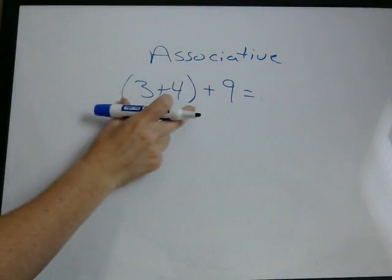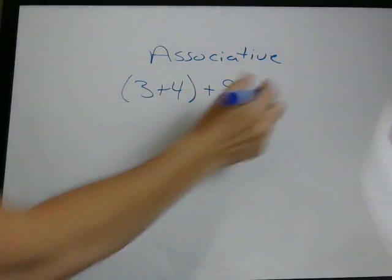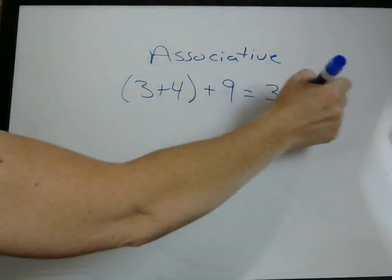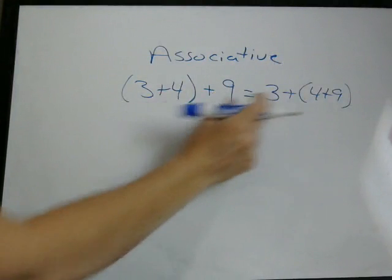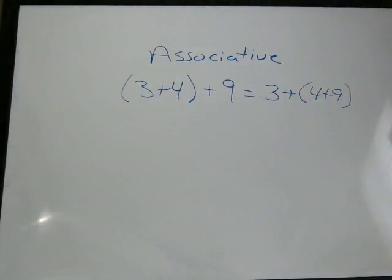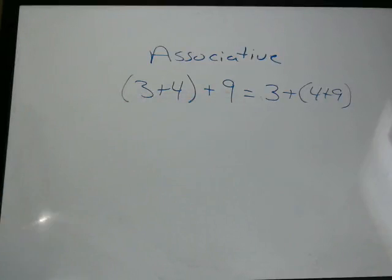If we group these together, remember we're always doing parentheses first when we evaluate mathematical operations. But this could easily be written where the parentheses are around these two numbers. These are going to give you the same answer. So with addition, it really doesn't matter how you are grouping these.